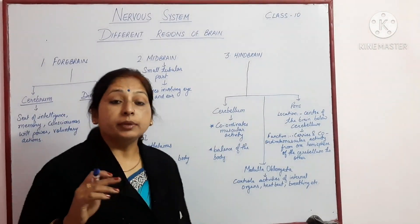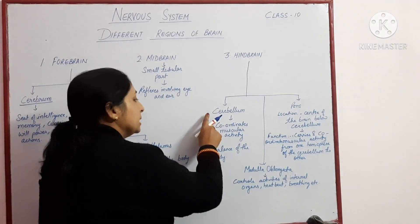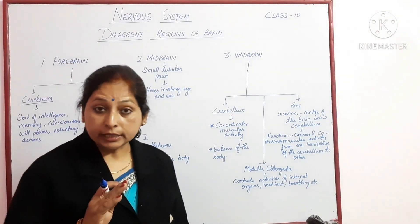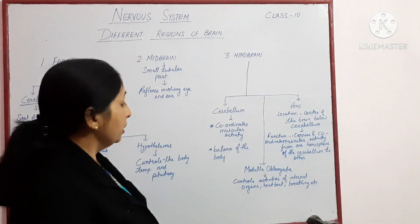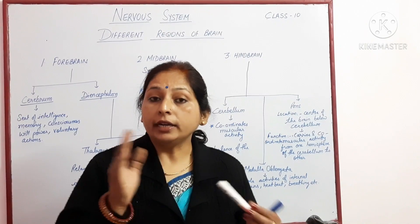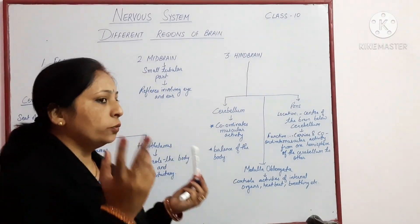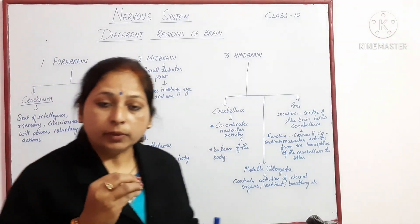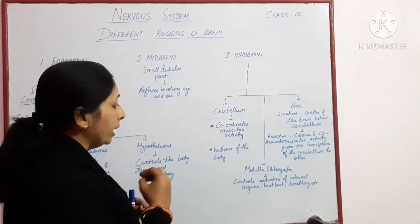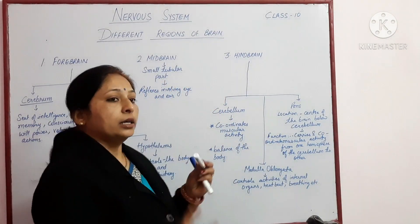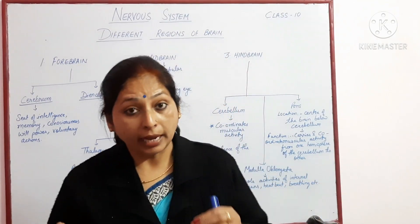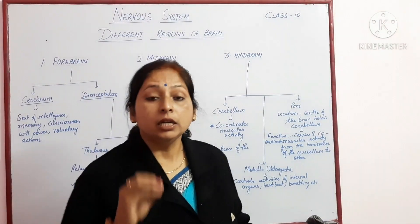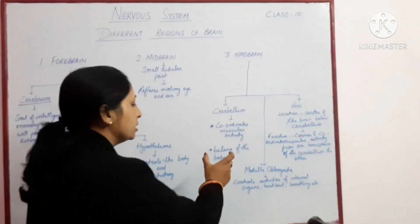The third region is hindbrain. Hindbrain has three regions: cerebellum, medulla oblongata, and pons. Cerebellum is responsible for all muscular activity and coordinating movements. When we do two things together — for example, moving and writing, or throwing a ball while moving — the balance of the body and coordination of such actions is managed by the cerebellum.